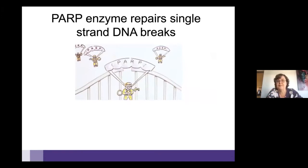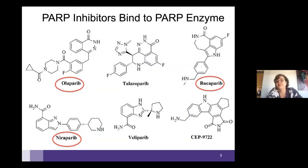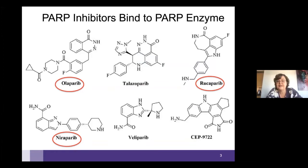The enzyme joins the strands of DNA that had been broken. When we use an inhibitor for the enzyme, the DNA cannot be repaired and the cancer cell will die. There are three PARP inhibitors approved for ovarian cancer: olaparib, rucaparib, and niraparib. There is also veliparib, which is not currently approved, and talazoparib, a potent PARP inhibitor approved for breast cancer.